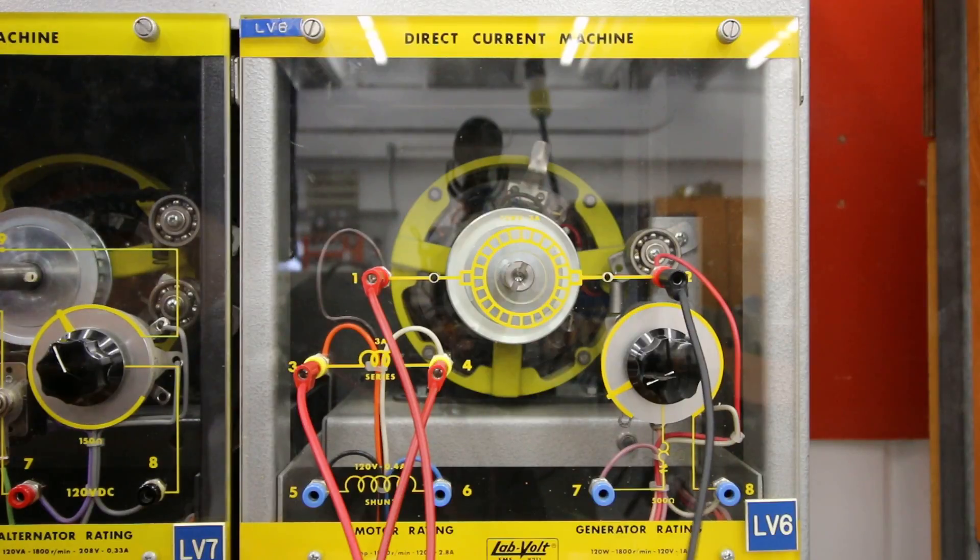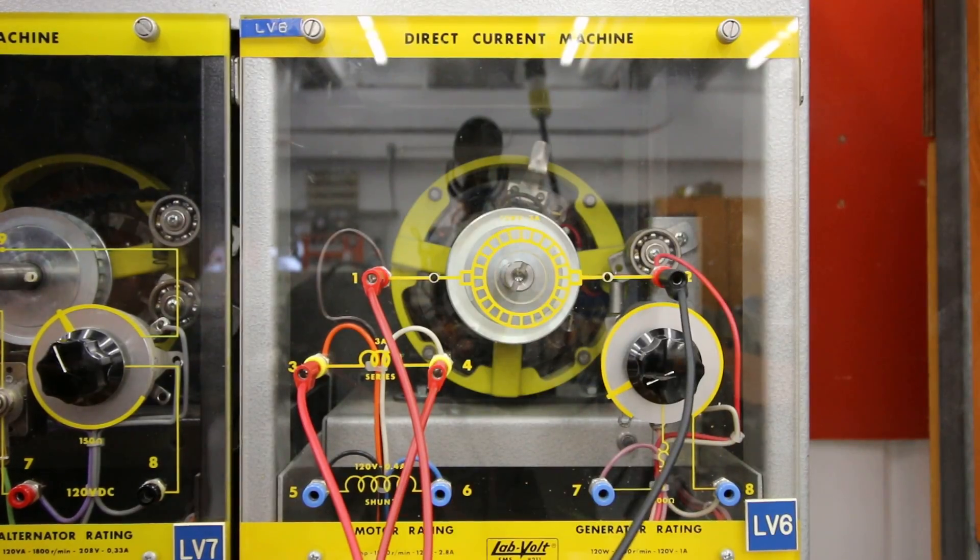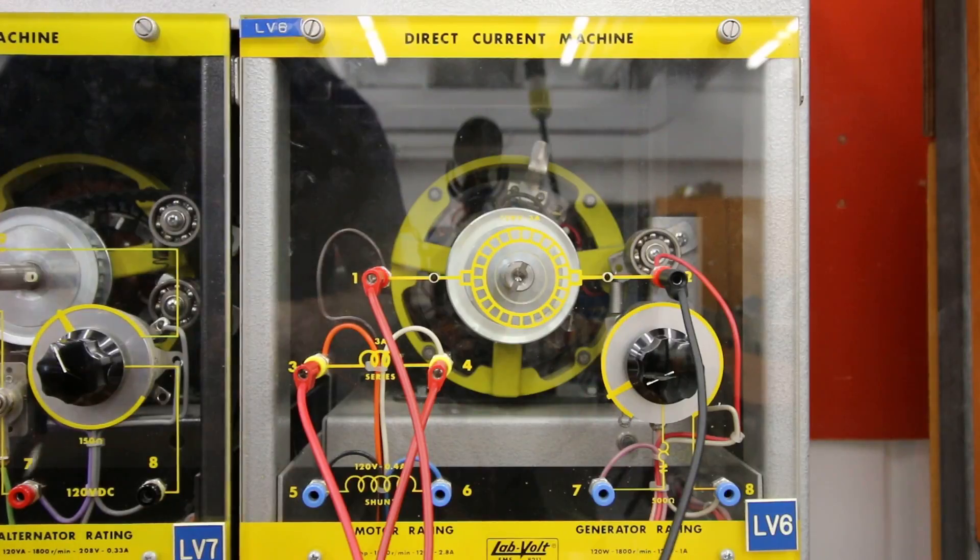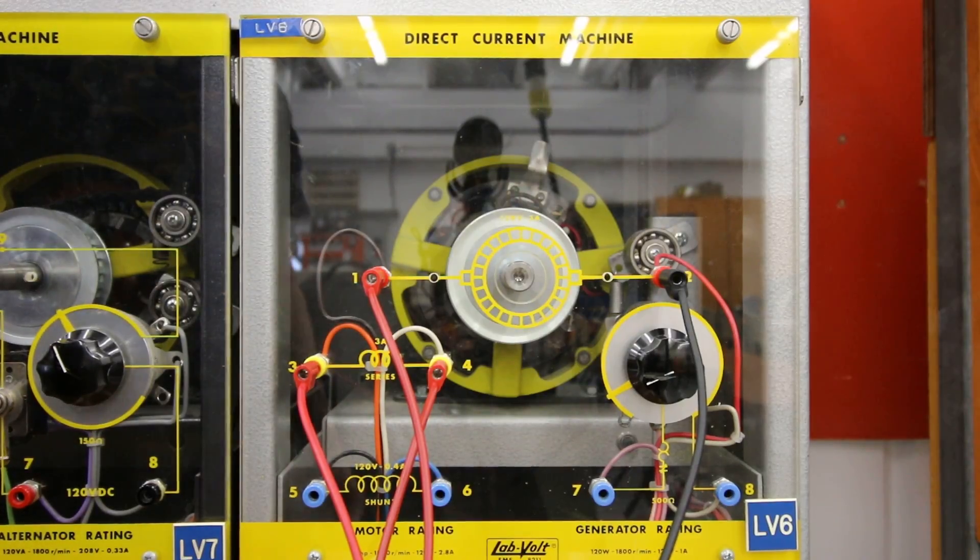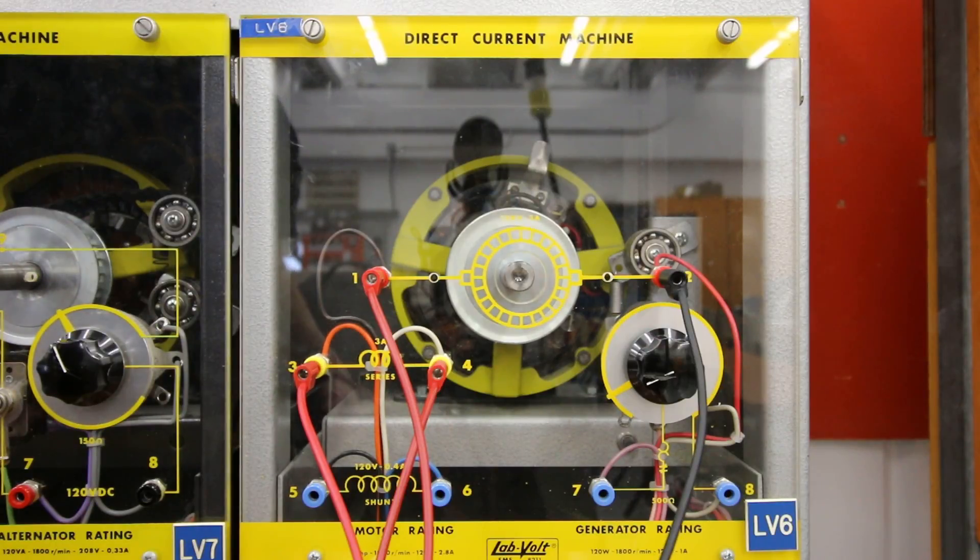Last thing I wanted to show you was changing the polarity of the source. So off camera, I've just changed my source polarity. And this motor is going in the same direction. If you change both the magnetic fields, then the motor will still spin in the same direction.